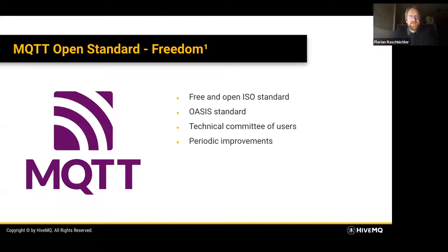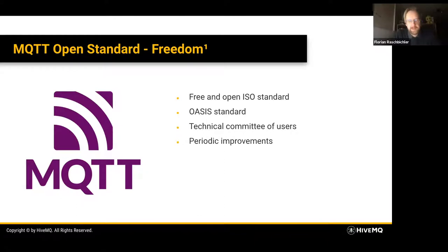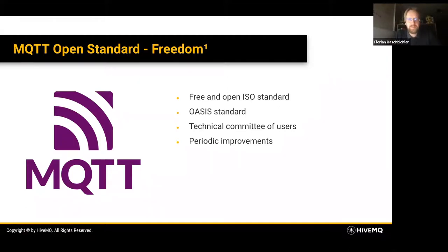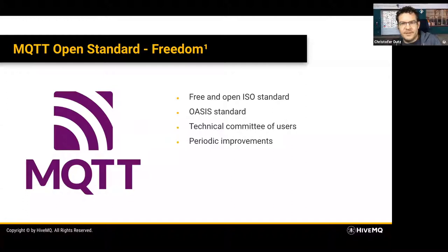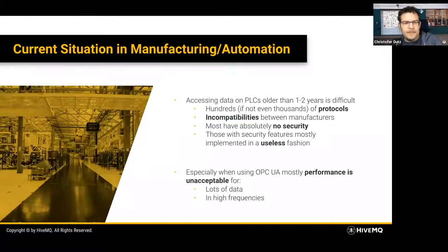It's worth pointing out that even though MQTT was initially developed by IBM, it is now a fully open standard — both an ISO standard and an OASIS standard with a technical committee consisting of many users and vendors, including HiveMQ and IBM. The latest version, MQTT 5, was officially released just last year. This represents the first degree of freedom: open and free standards. We'll be seeing three more degrees of freedom.